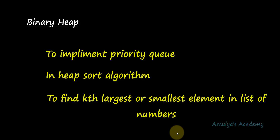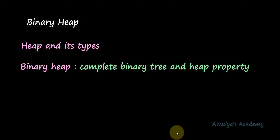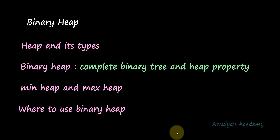To summarize today's tutorial: we discussed about heap and its different types, focusing on binary heap. A binary heap is a complete binary tree with the heap property. We discussed what a complete binary tree is and what the heap property is. A binary heap is either a min heap or a max heap, and we saw examples for both. We also saw where we can use binary heap. In the next tutorial we will discuss the operations of the binary heap data structure. Don't forget to subscribe to the channel — take care!